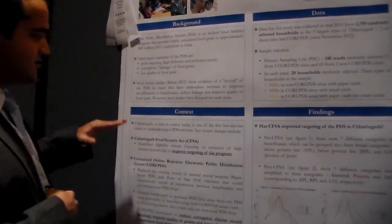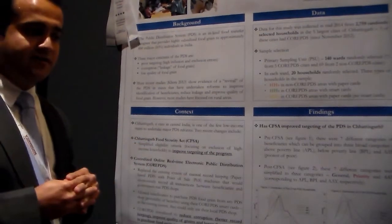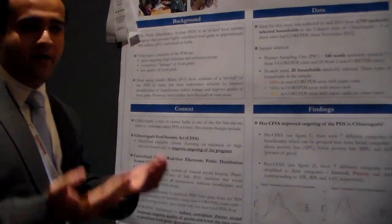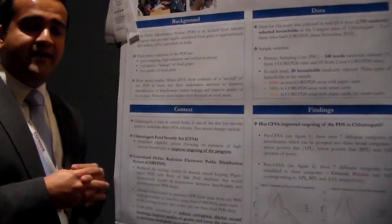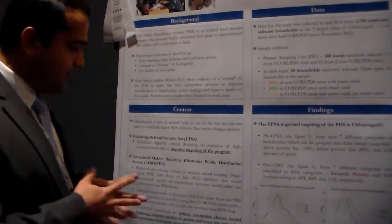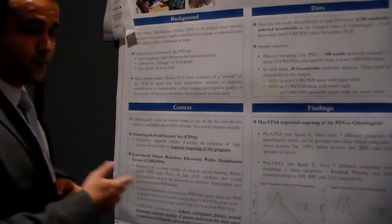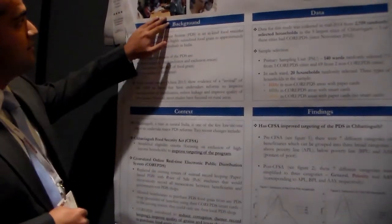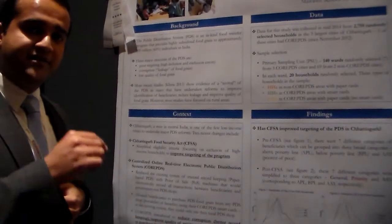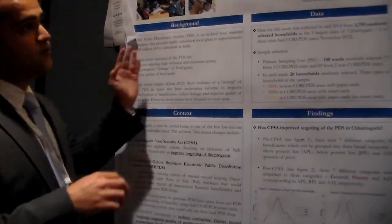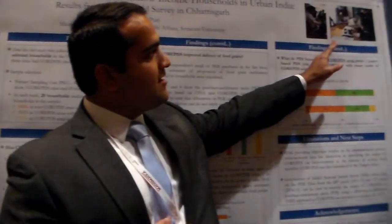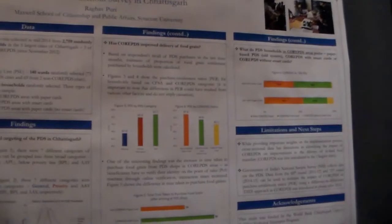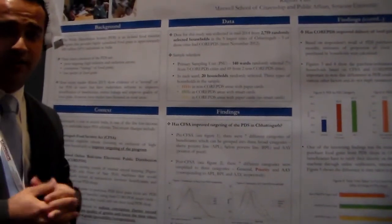The first reform was the Chhattisgarh Food Security Act, which simplified eligibility criteria so that people could be part of the program and identified the right people, so improved targeting. The second program was Core PDS — earlier they used a paper-based system with manual entries in a register. But then they moved to a new program using machines like debit card machines, where people swipe a smart card to identify themselves, which reduces corruption.